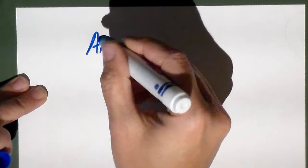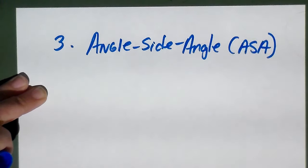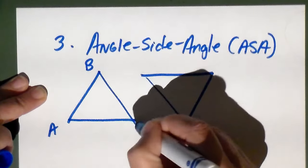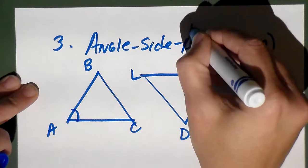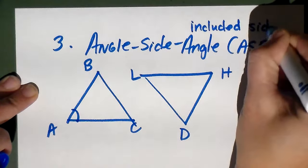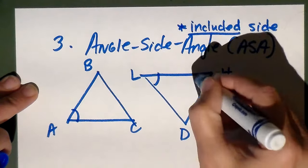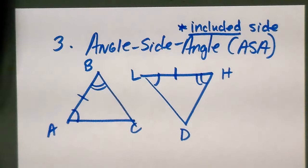The third congruence is angle-side-angle, or ASA. Angle-side-angle means you have an included side — a side that touches both angles. If I have triangles ABC and DHL, the side has to touch both angles. This is angle-side-angle: the included side is very important.